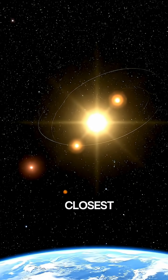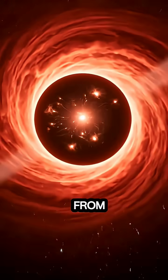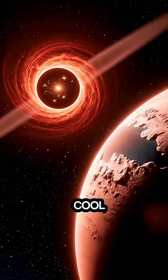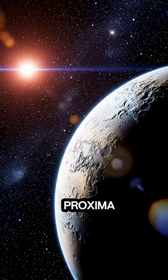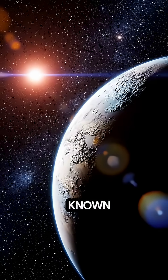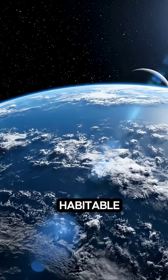The closest is Proxima Centauri, about 4.24 light years from Earth. A small, cool red dwarf star. Orbiting it is Proxima b, the nearest known exoplanet, possibly rocky and located within its star's habitable zone.